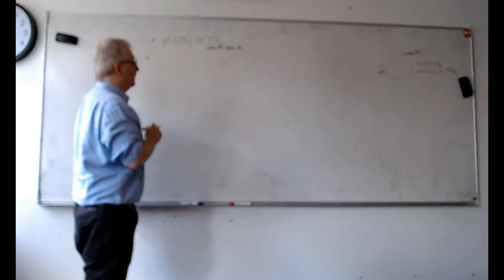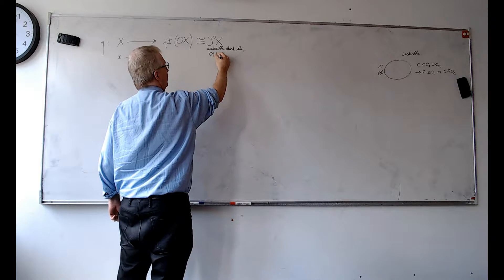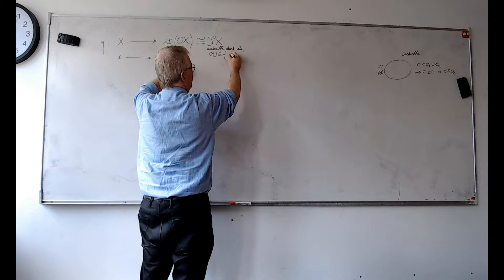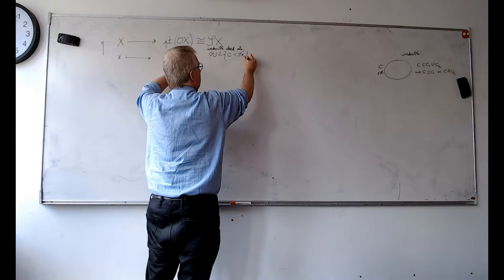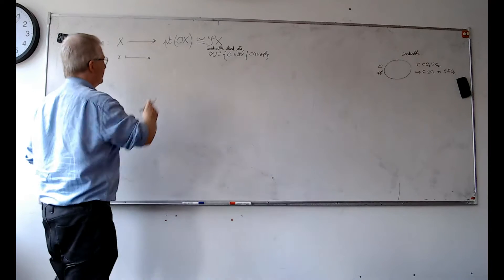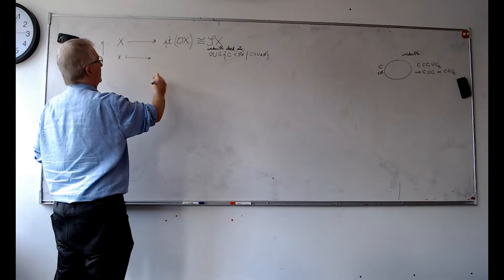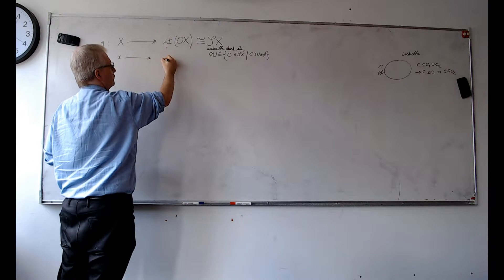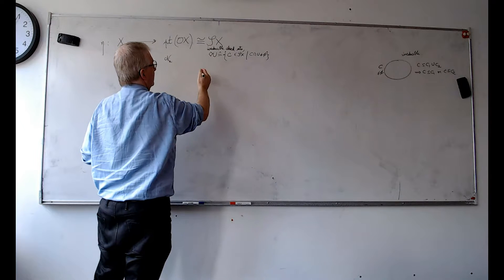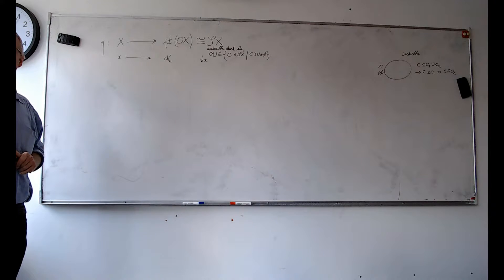S(X) was the set of irreducible closed sets equipped with a topology whose open sets were called diamond-U, defined as the set of irreducible closed sets C that intersect U. That gives you completely prime filters. The map η maps every point X to an element of that — the completely prime filter of open neighborhoods of X — which corresponds to the downward closure of X, which is closed and irreducible.